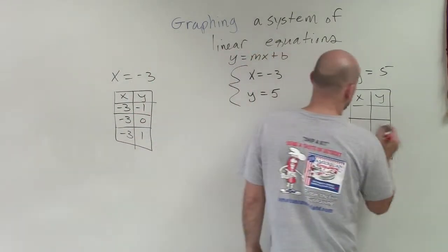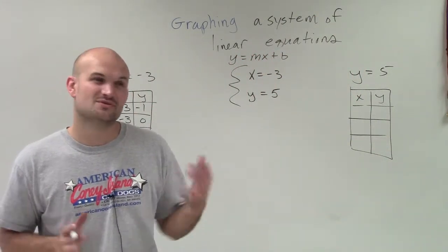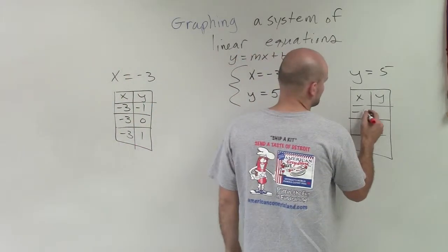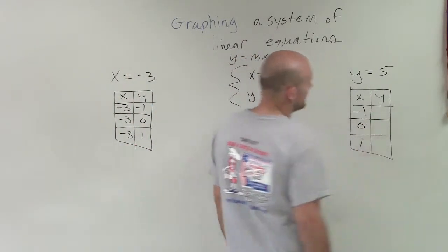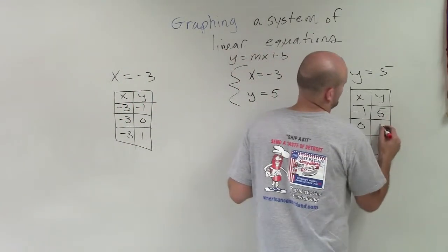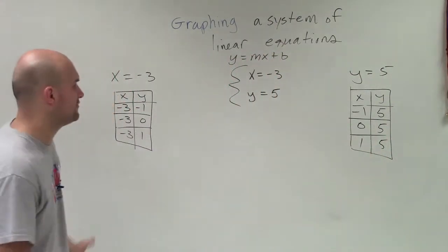That's the same case for over here. When we're picking a table, we choose our values for x - usually get some negatives and positives, always choose 0. But you notice that y always equals 5. It doesn't matter what values I pick for x, y is always going to equal 5.